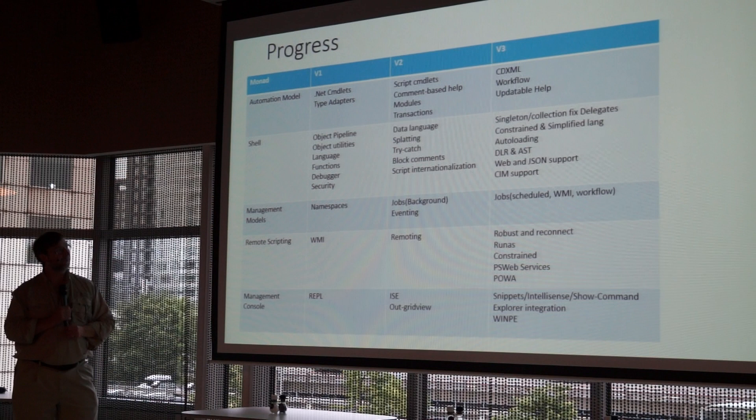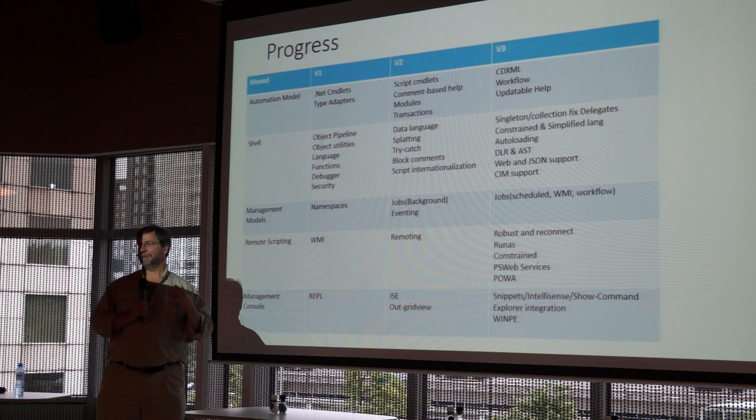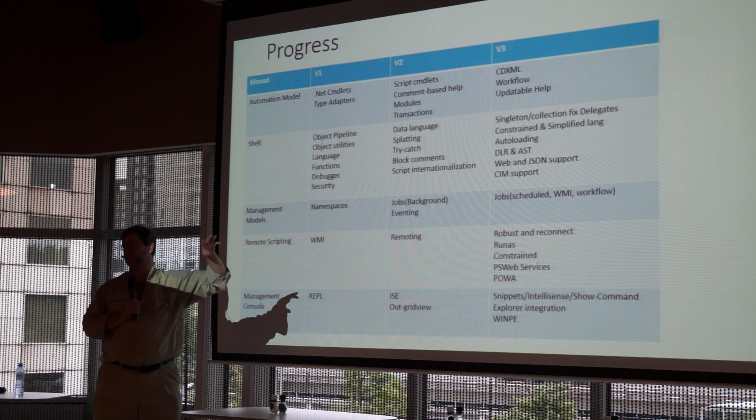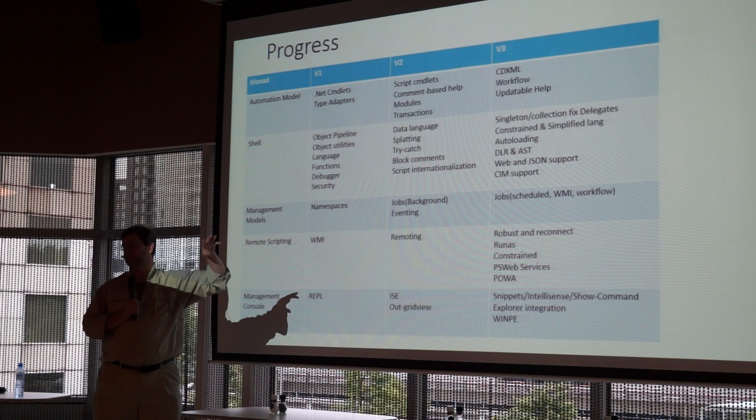Version 3 also brought workflow, updatable help. Some people are still on PowerShell version 2 — you want to get off that. This is the one where we fixed the singleton collection problem. You'd say dollar-sign x equals get-process something-star, and the question was: did that return one or multiple things? Not knowing caused all sorts of pain. We fixed that in version 3.